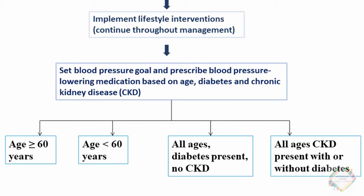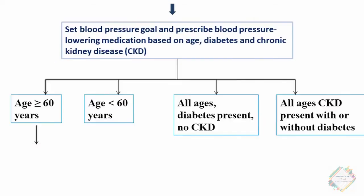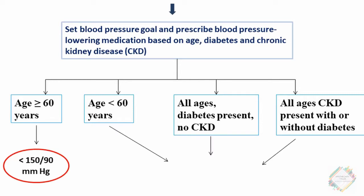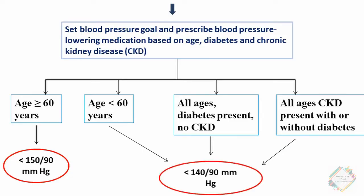The blood pressure goal for patients aged greater than or equal to 60 years is to maintain a BP of less than 150/90 mmHg. Whereas for the other three categories, the main BP goal is to maintain BP less than 140/90 mmHg. Now we have set up the BP goal.